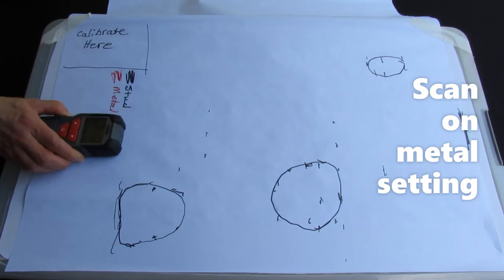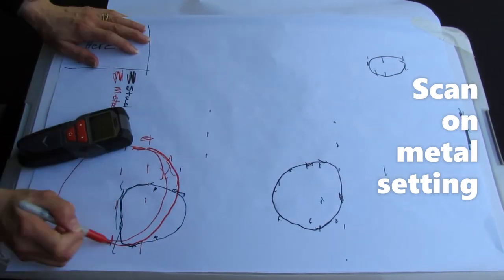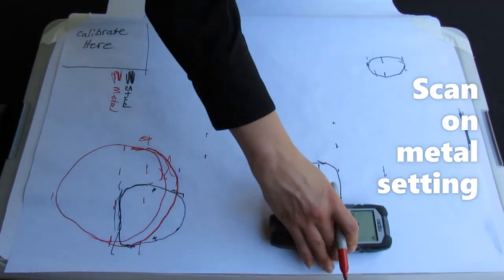Draw the approximate shapes of the deposits that gave a strong signal. Then repeat your scanning on the metal setting. This models a magnetic survey.